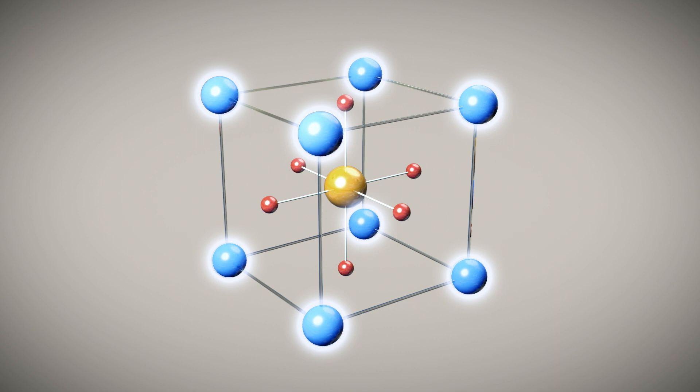Perovskites have a cation on the A site and a different cation, commonly a transition metal, on the B site, which is octahedrally coordinated by anions, usually oxygen.